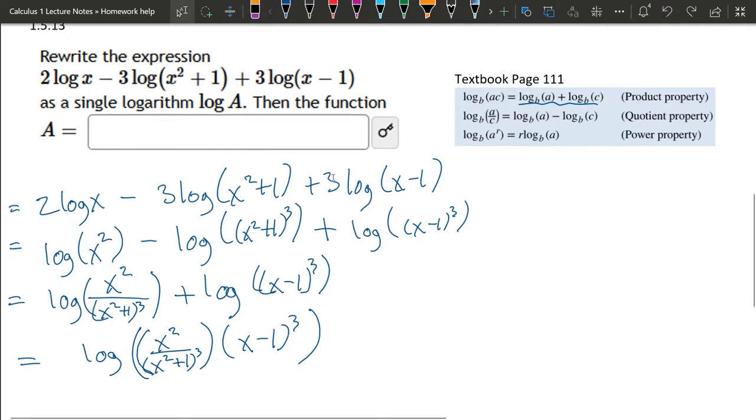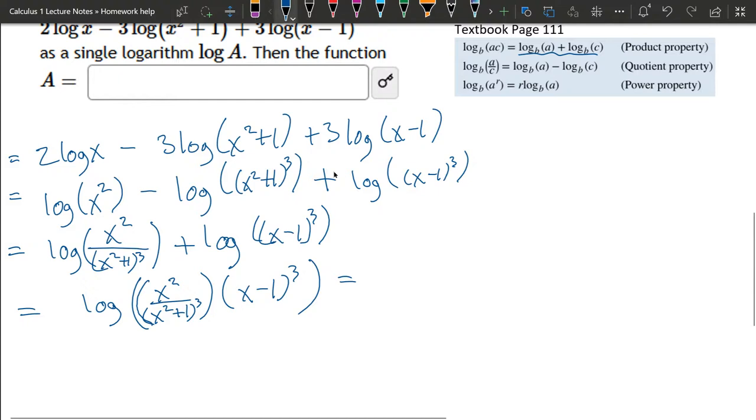From here, you could just leave your answer like this, totally fine. Or you could multiply your fractions, you would put this one over 1, so the denominators, nothing would happen to the denominator. It would just be log of x squared plus 1 cubed in the denominator, because that's multiplied by the 1 right there. The numerator, we have an x squared times x minus 1 cubed. And that would be your single, rewritten as a single log.